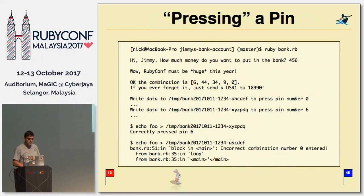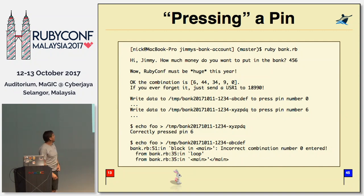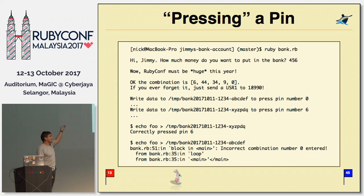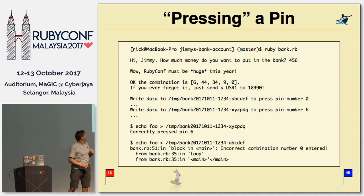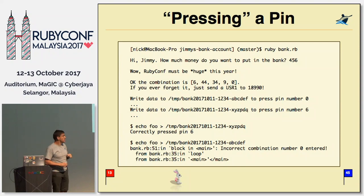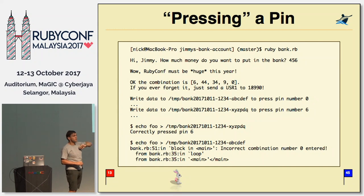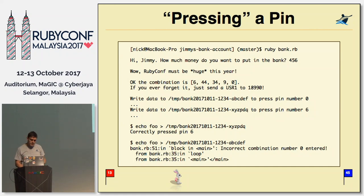What does it look like in real life? Running bank.rb — Jimmy has 456 units of currency. You type that in, and it prints out the combination, saying if you ever forget this, you can send a SIGUSR1 signal to this process. Then it lists out the files representing the different pins. If I see the first number in the combination is 6, and I echo 'foo' into that file, the bank script tells me I've correctly pressed the first pin. If I echo 'foo' into a wrong pin file, I get an error, the bank crashes, and swallows Jimmy's money — keeping it safe.